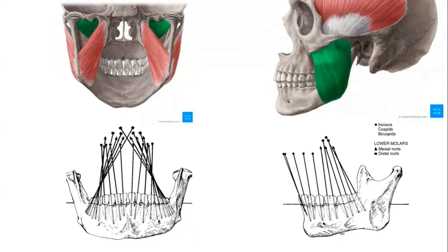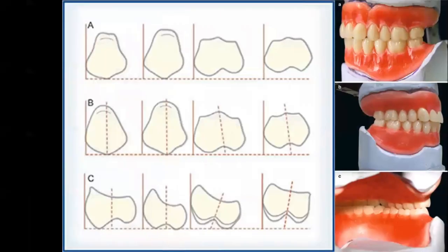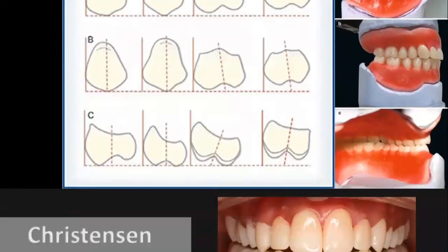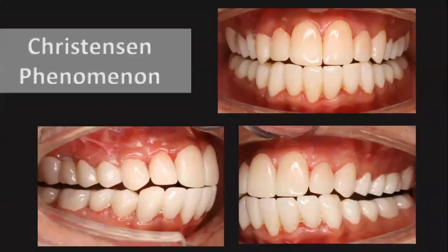Do we have a similar arrangement in our complete denture? In the Glasslab arrangement of the maxillary posteriors, in the sagittal section, as we go posteriorly the molars are inclined distally, and in the coronal section the molars are inclined buccally — similar to natural dentition. So can we say the natural dentition and complete denture have a similar arrangement?